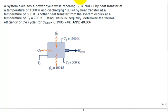So let's solve this problem. We have a system that executes a power cycle while receiving 700 kilojoules in Q1 by heat transfer at a temperature T1 of 1500 kelvin, and it discharges Q2 of 100 kilojoules across a boundary temperature of 500 kelvin. Another heat transfer of unknown magnitude Q3 occurs at a temperature T3 equal to 700 kelvin.